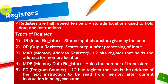Next we have the PC, or Program Counter, which is a 12-bit register that holds the address of the next instruction to be read from memory while the current instruction is being executed. For example, if you have three instructions A, B, and C, and instruction A is being executed, the program counter stores the address of instruction B — the next instruction to be executed.